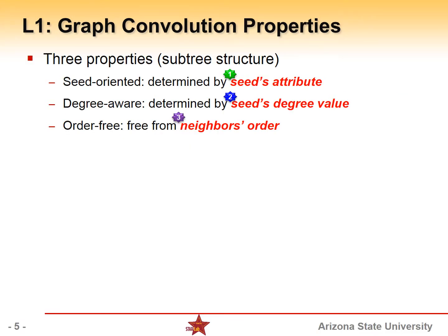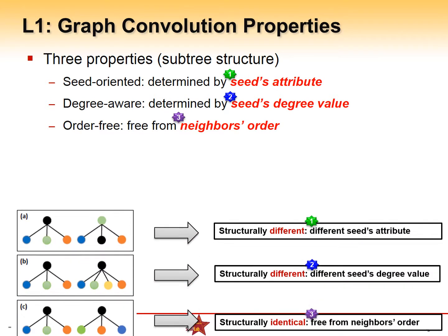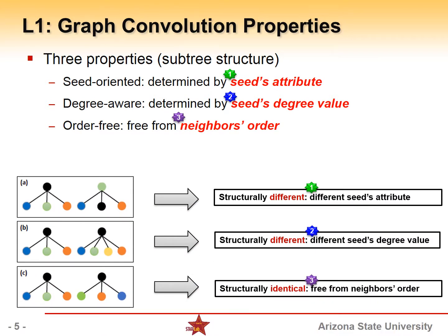Based on these observations, we provide three properties that the graph convolution should follow in order to learn the subtree structures. Seed-oriented, it means the representation is determined by the seed's attributes. Degree-aware, the subtrees are different if they have different degree values. Order-free, that means the learned representation is free from the neighbor's order.